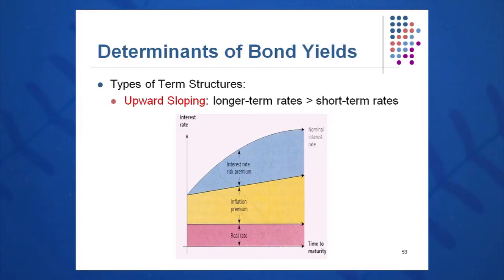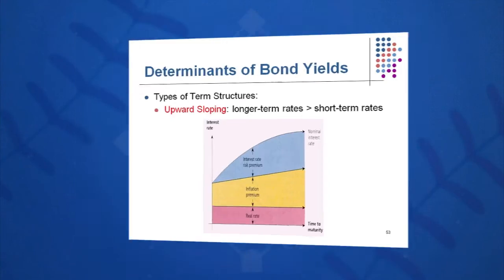The term structure is comprised of a real rate, an inflation premium, and an interest rate risk premium. Longer-term rates are typically greater than short-term rates in this upward-sloping structure.